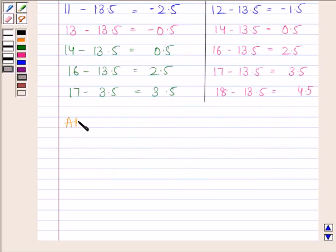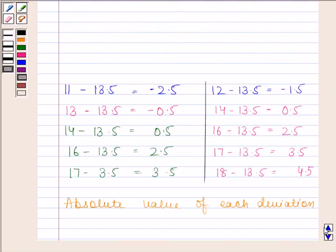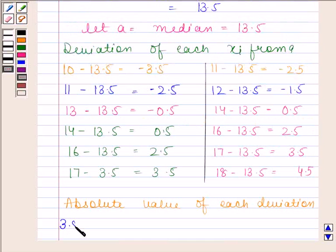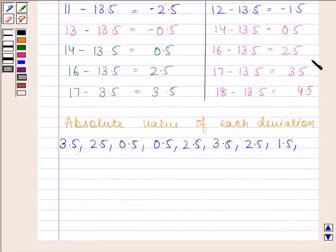Now we will find the absolute value of each deviation. The absolute value of minus 3.5 is 3.5. The absolute value of minus 2.5 is 2.5. The absolute value of minus 0.5 is 0.5. The absolute values of 0.5, 2.5, and 3.5 are 0.5, 2.5, and 3.5. The absolute value of minus 2.5 is 2.5, and the absolute value of minus 1.5 is 1.5. The absolute values of 0.5, 2.5, 3.5, and 4.5 are 0.5, 2.5, 3.5, and 4.5.